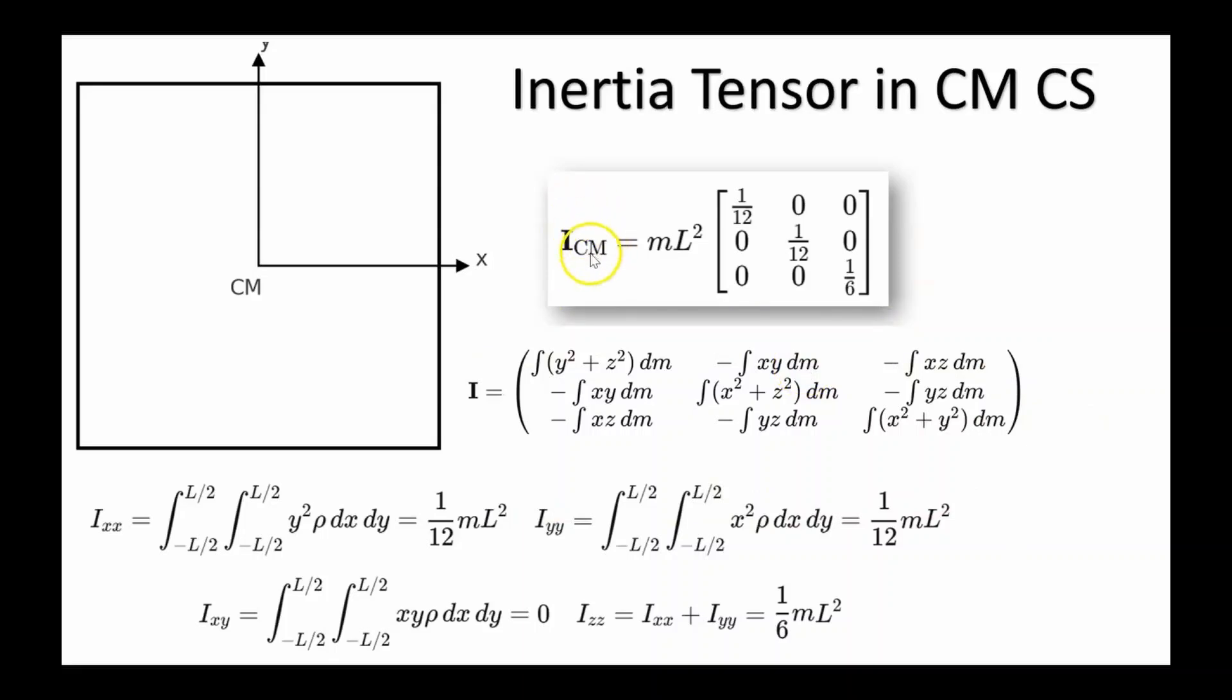What I'm labeling ICM is the moment of inertia tensor for this plate for this specified coordinate system. Ixx is the integral of y squared plus z squared dm. We can set z equals to zero because its thickness is much smaller than its width. Ixy is zero, that's computed down here. The integrals can be computed and this is the moment of inertia tensor.